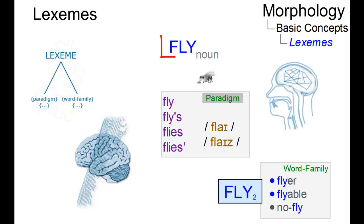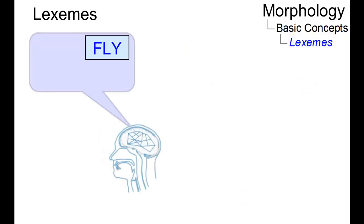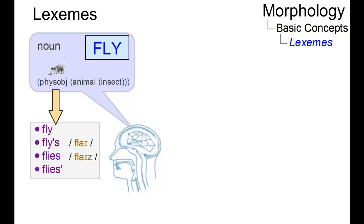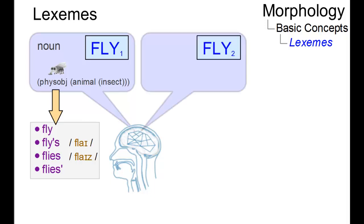By convention, lexemes are represented in capital letters. Here is an example: the lexeme FLY. Like all lexemes, FLY belongs to a particular syntactic category, it has a certain meaning, and in synthetic languages, it has a corresponding inflectional paradigm which lists its inflectional realizations.